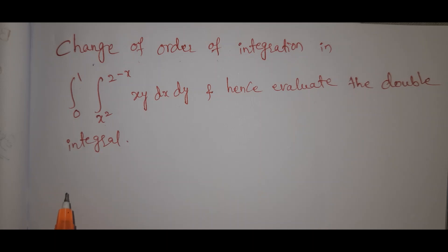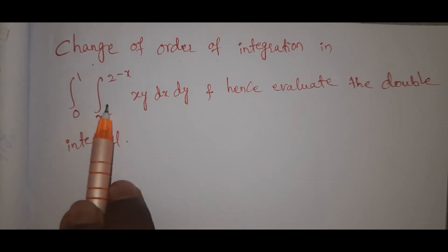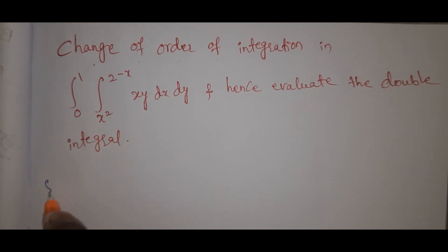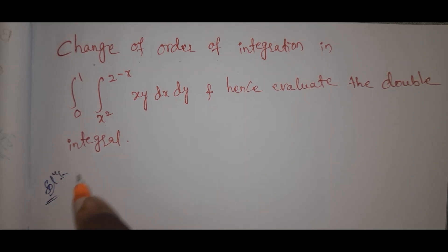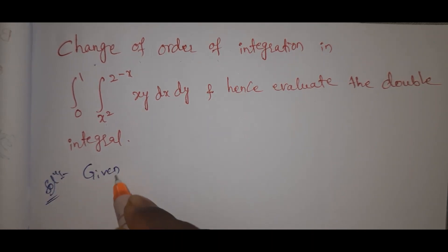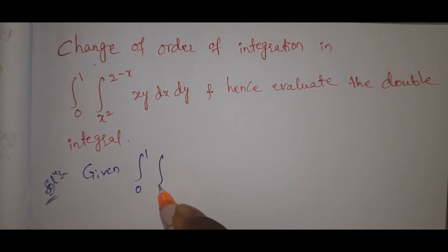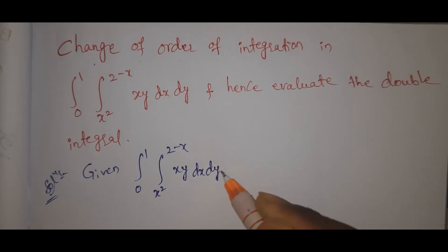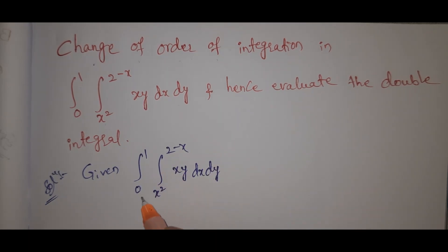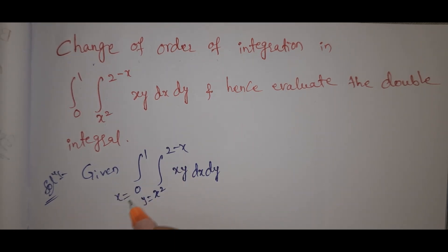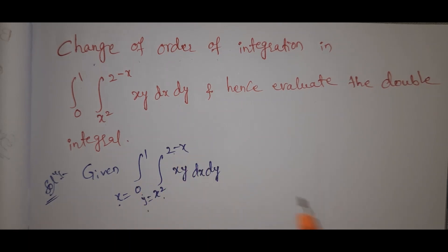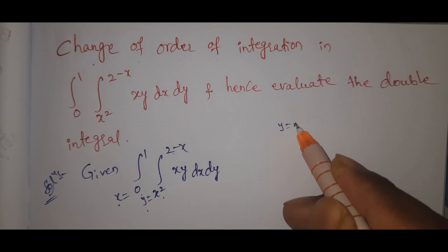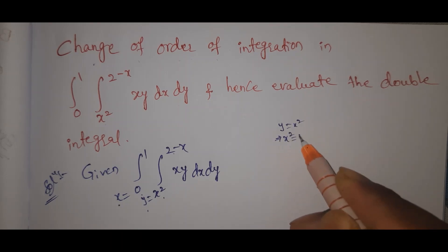We have the limits of the integral: from 0 to 1 (outer), and from x² to 2 minus x (inner). Looking at the limits, the inner integral is with respect to x variables. The lower limit of y is x squared — that is, x² = y.